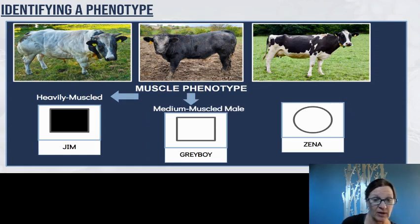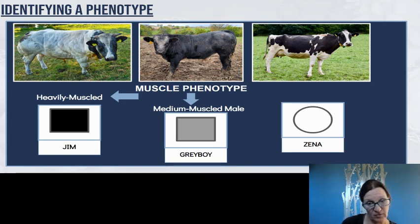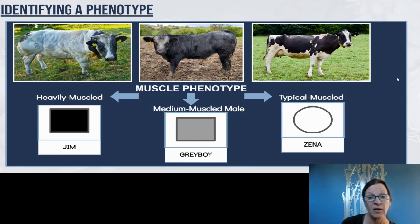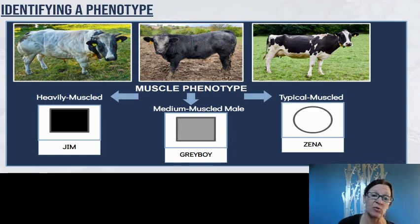The medium muscle phenotype we're going to represent with the color gray. Gray Boy is a male, so he has a square, and we're going to color his square in gray. Finally, the third phenotype for muscles is typical. Xena, up in the upper right corner, has the typical muscle phenotype, and we are going to represent that phenotype with the color white — we are not going to fill her circle in with anything.